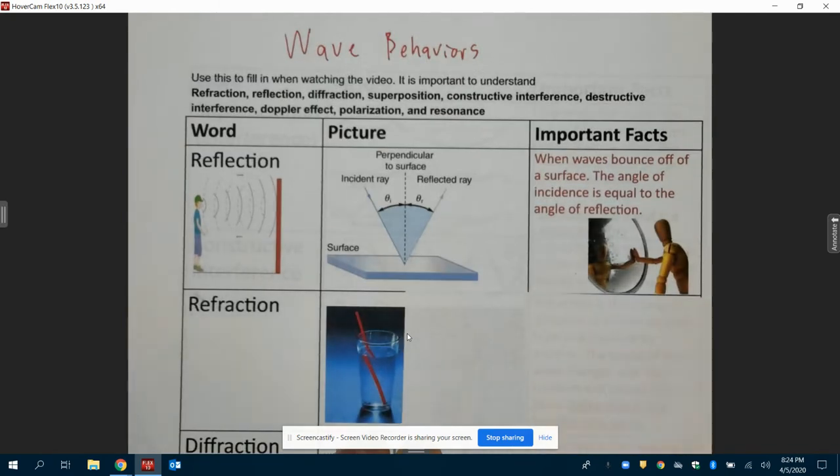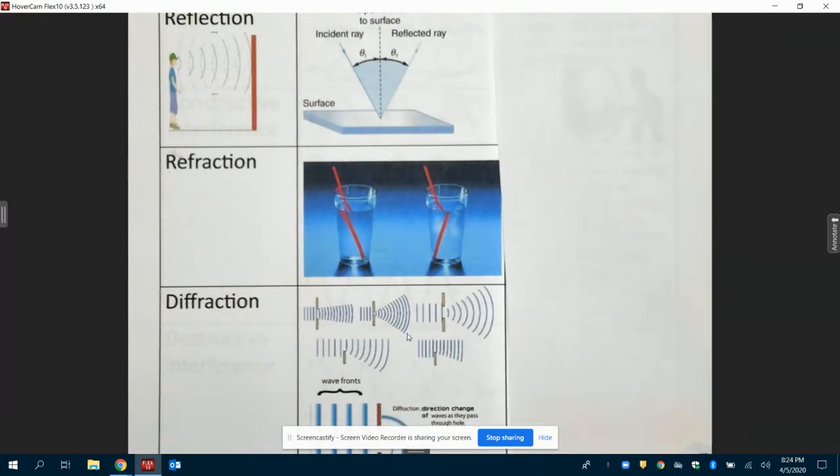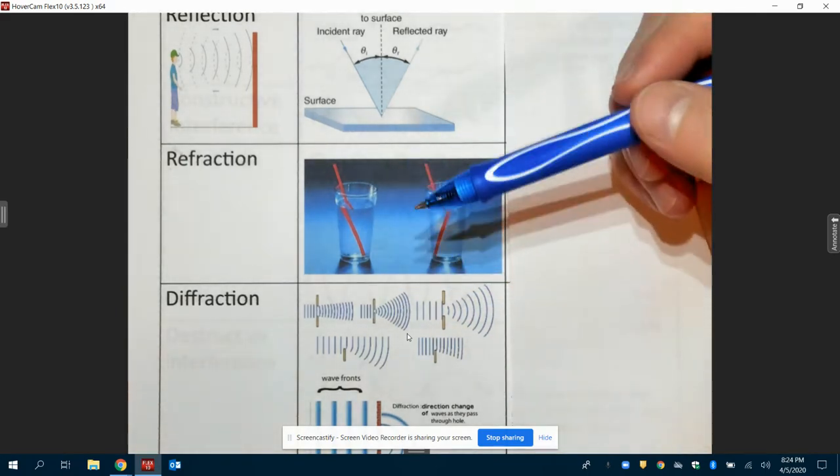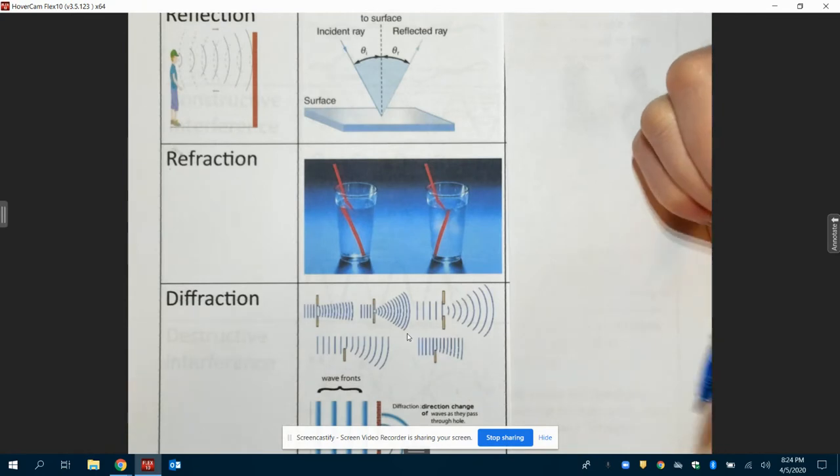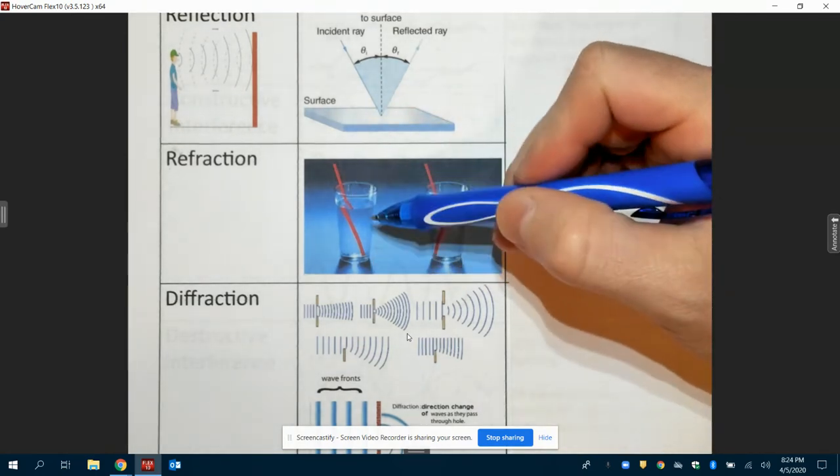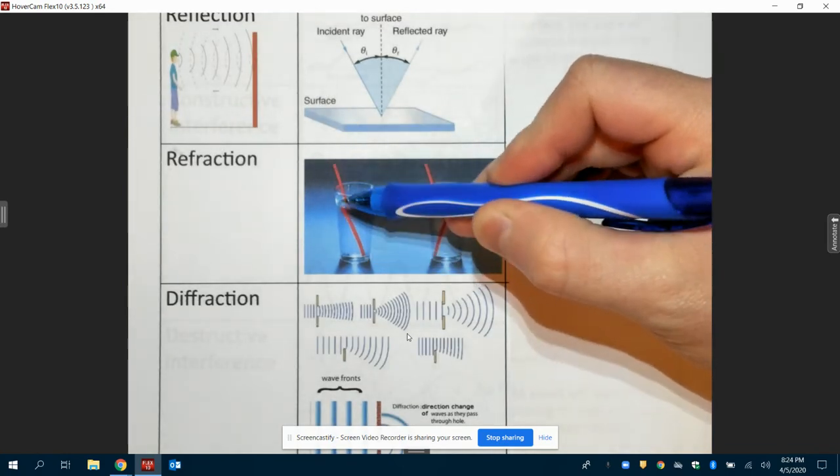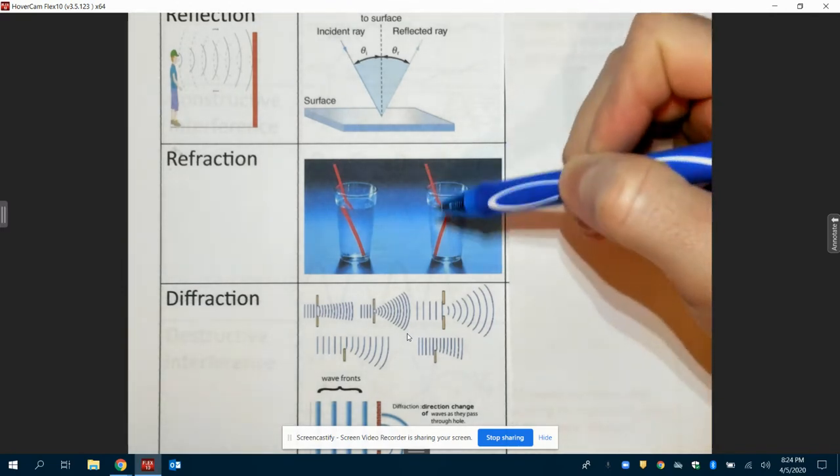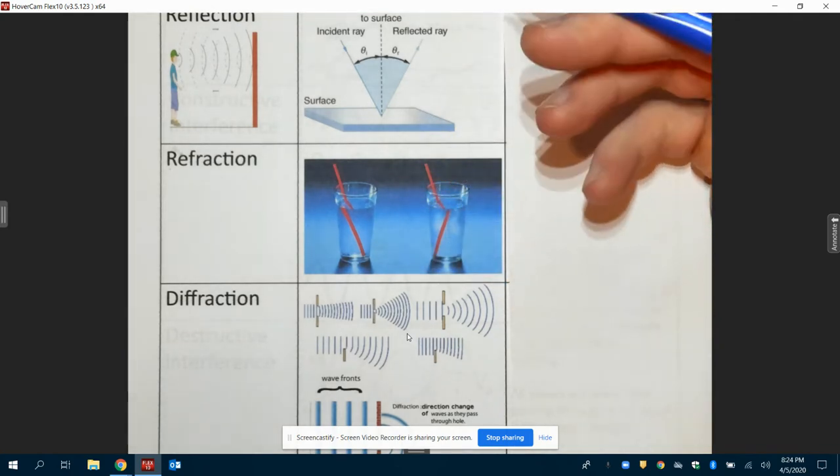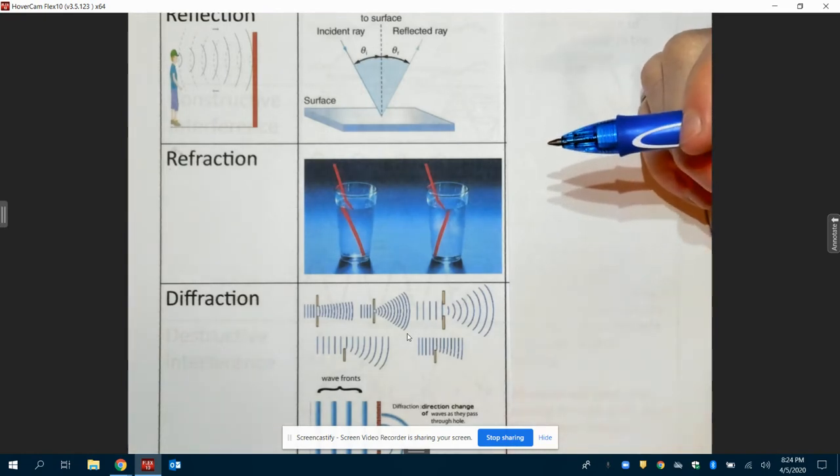Now we're moving to refraction, and refraction is a little different. It sounds similar, but this is a very different term. You've probably seen this phenomenon before. Teachers are probably showing you the broken pencil, maybe when you were in elementary. When you look in a glass of water, and you have a straw or a pencil or something in it, and you look from the side, it looks broken. It does not look like it's one straight line. When you pull it out, you know it's a straight line. So what is happening there?